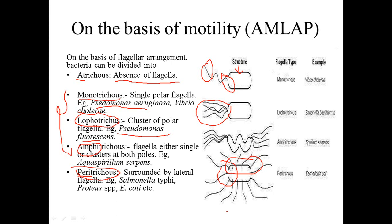Examples of bacteria with Peritricus flagella are all the motile Enterobacteriaceae — for example, Salmonella, Proteus, and E. coli. These types of bacteria have the Peritricus flagella arrangement.